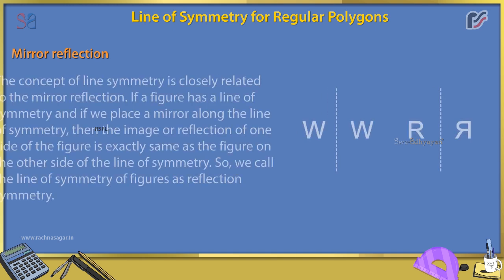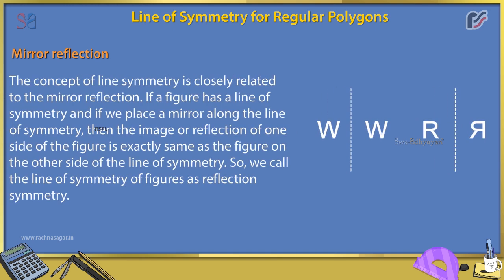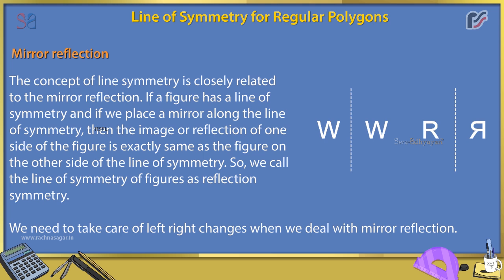Mirror reflection. The concept of line symmetry is closely related to mirror reflection. If a figure has a line of symmetry and we place a mirror along the line of symmetry, then the image or reflection of one side of the figure is exactly the same as the figure on the other side of the line of symmetry. So, we call the line of symmetry of figures as reflection symmetry. We need to take care of left-right changes when we deal with mirror reflection.